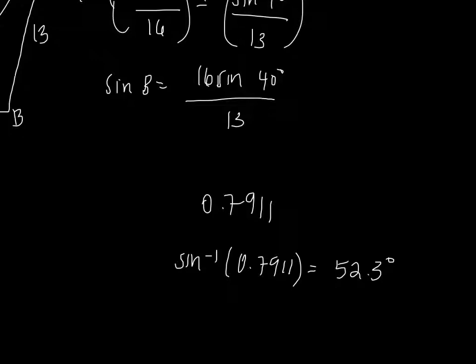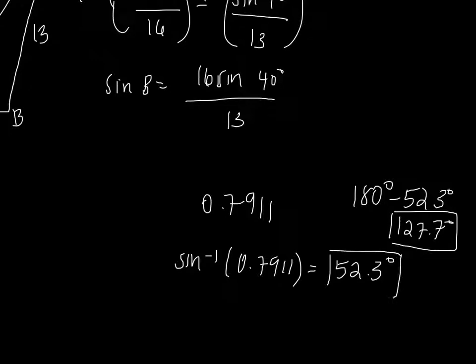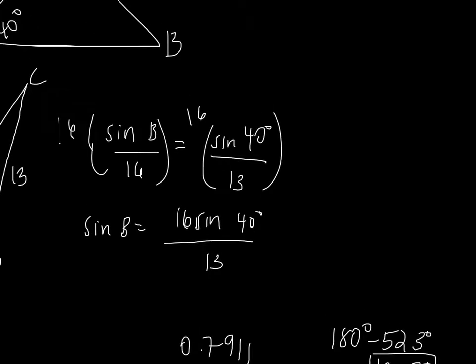Now we can have either 52.3 as measure of angle B, or we can have 180 minus 52.3, which is 127.7. Therefore, B can either be this value or this value. This is because there are two angles between 0 and 180 for which sine B equals 0.7911. And these are the two angles that I have drawn here.